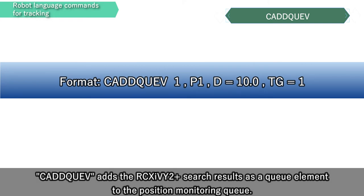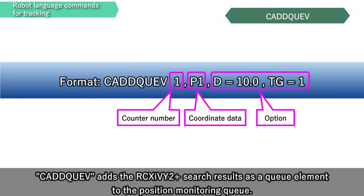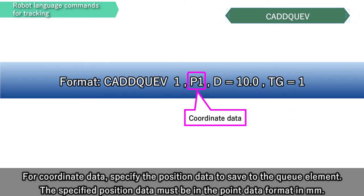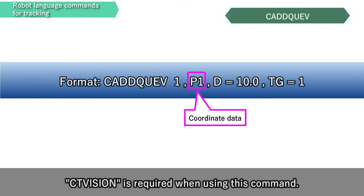SEADQV adds the RCX-IV2 Plus search results as a queue element to the position monitor in queue. For coordinate data, specify the position data to save to the queue element. The specified position data must be in the point data format in millimeters. CT Vision is required when using this command.